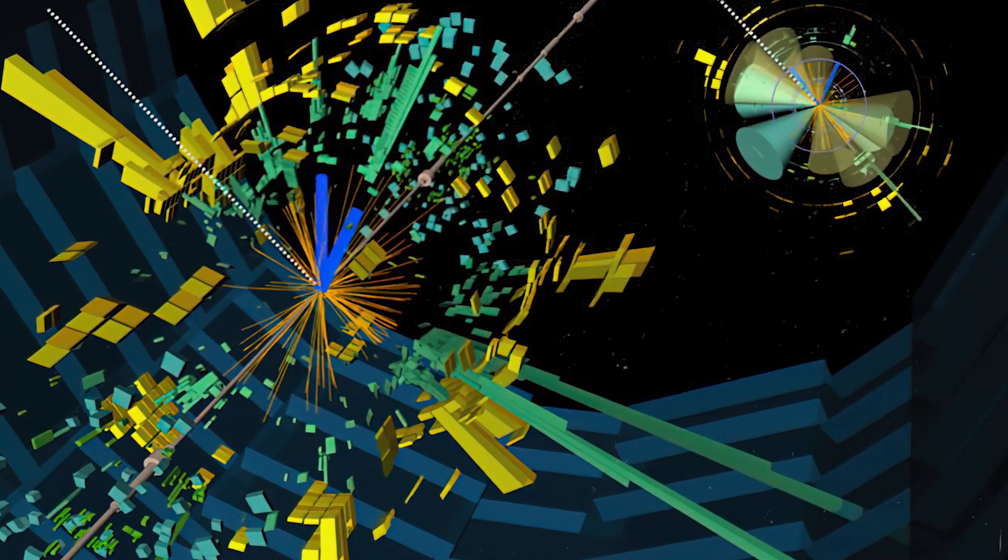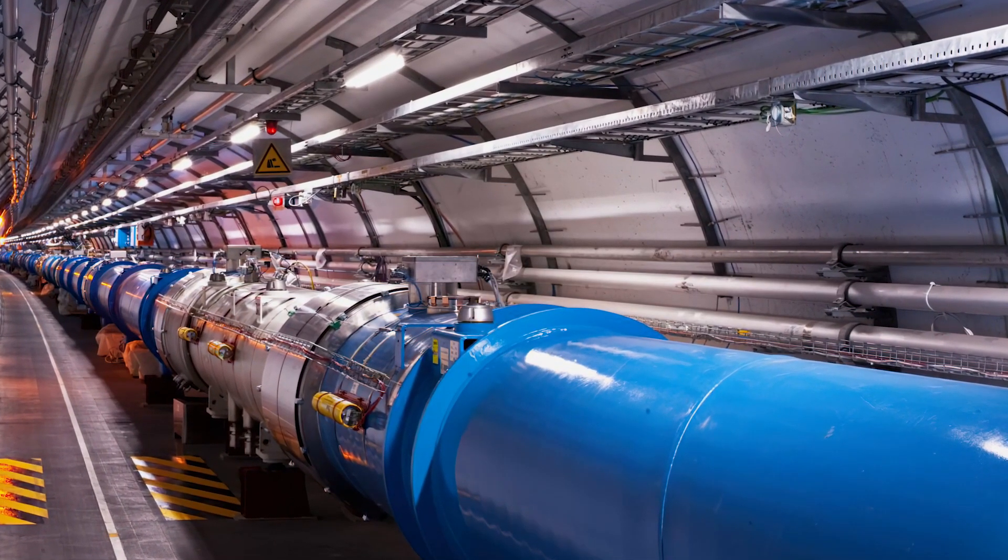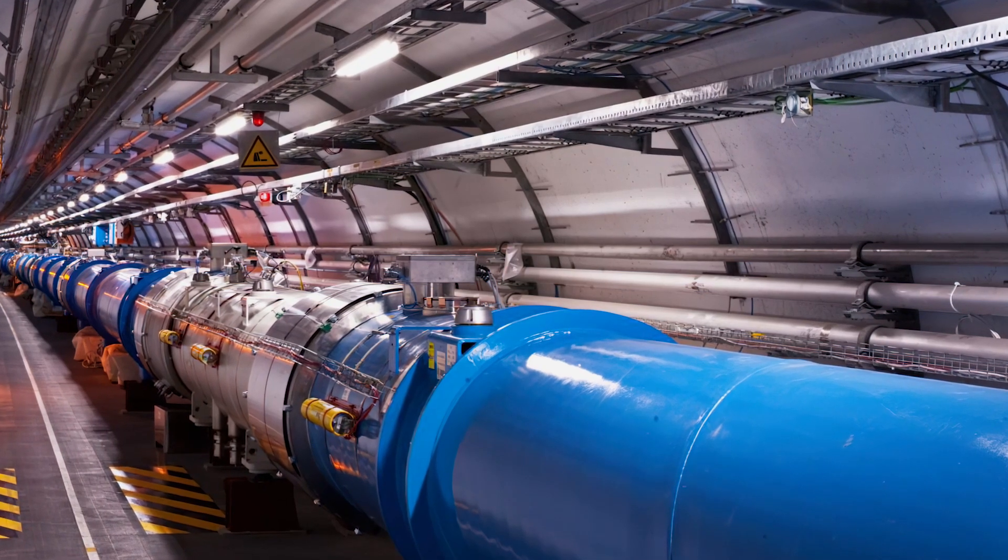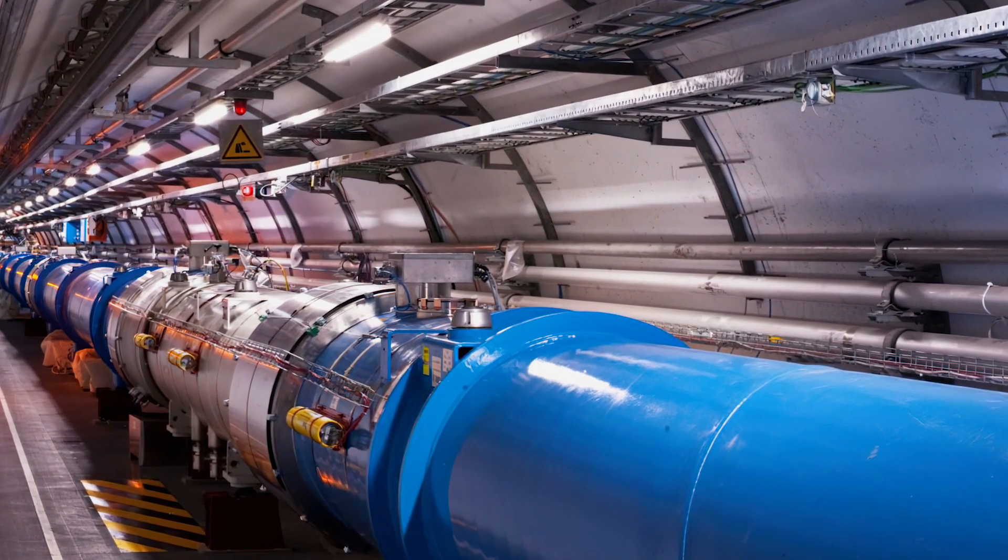Particles get their mass by interacting with the Higgs field. They do not have a mass of their own. The stronger a particle interacts with the Higgs field, the heavier the particle ends up being. Photons, for example, do not interact with this field and therefore have no mass. Yet other elementary particles, including electrons, quarks and bosons, do interact and hence have a variety of masses. This mass-giving interaction with the Higgs field is known as the Brout-Englert-Higgs mechanism, proposed by theorists Robert Brout, Francois Englert and Peter Higgs.